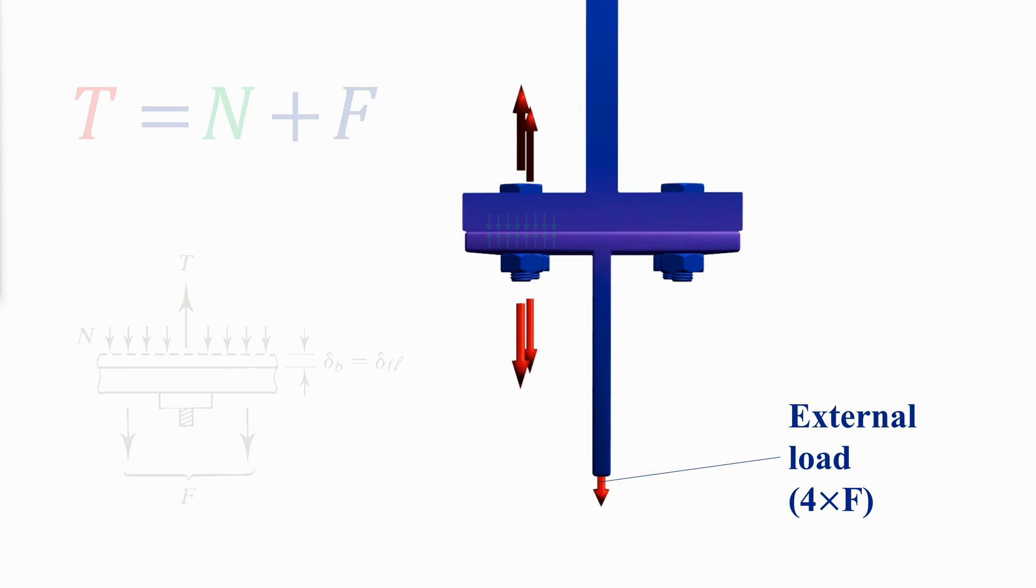In the presence of an applied external force F, the tension in the bolt will be the sum of the compressive force and the external applied load. While the flanges remain in contact, the amount of elongation in the bolt is equal to the amount of contraction in the flanges.